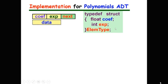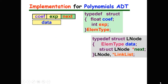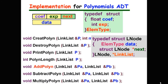Here we have to redefine the element type. For each element, it has two data items: one for its coefficient and one for its exponent. The node definition in this linked list is the same — we only have to redefine element type. Then we can define operations on the list, such as how to create a sparse polynomial, destroy, output, or add two polynomials.